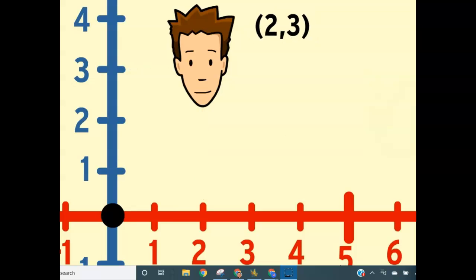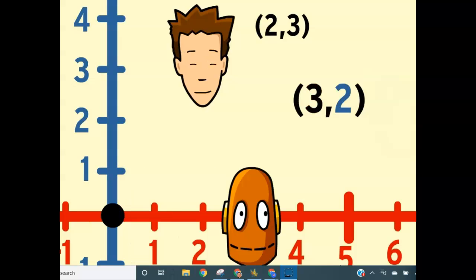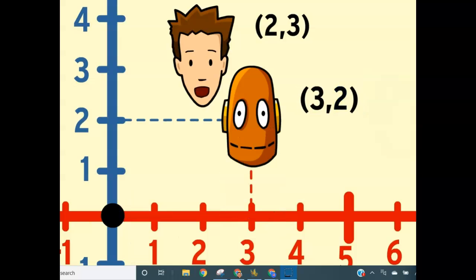But if you were finding the point described by the ordered pair three comma two, you start out by going three units to the right and then two units up. We're in totally different places.